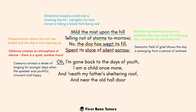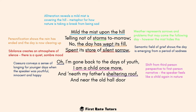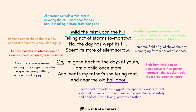In the second stanza, the speaker states 'Oh, I've gone back now.' The caesura after 'O' conveys a sense of longing for younger, more youthful, innocent, and happy days before problems came. Then they state 'I am a child once more' — there's a shift from the third person perspective in the first stanza to the first person narrative, so the speaker feels like a child again in nature. They also refer to 'my father's sheltering roof and old hall door', which suggests the speaker wants to feel safe, with nature providing a semblance of safety and comfort like a loving, protective father.